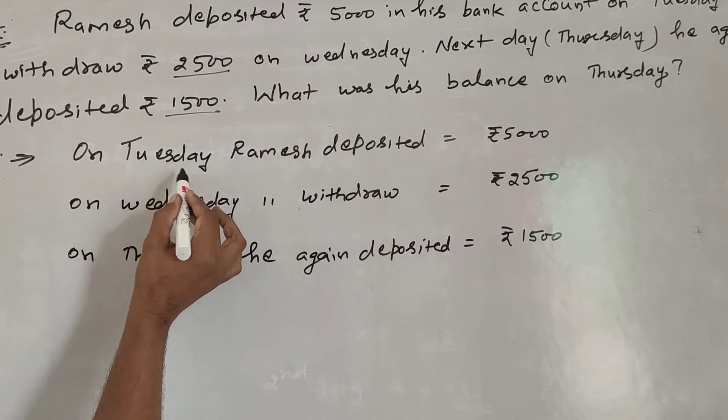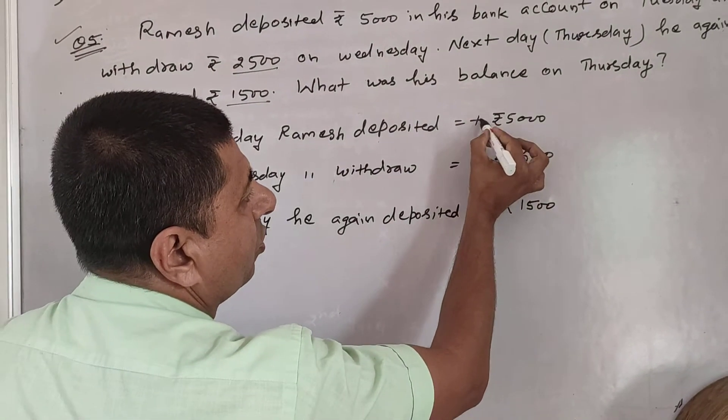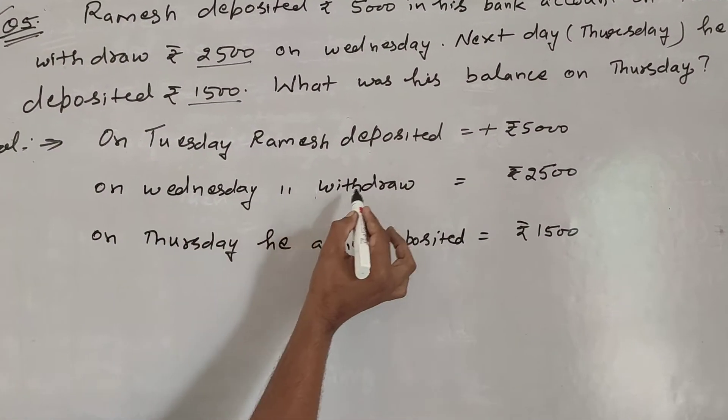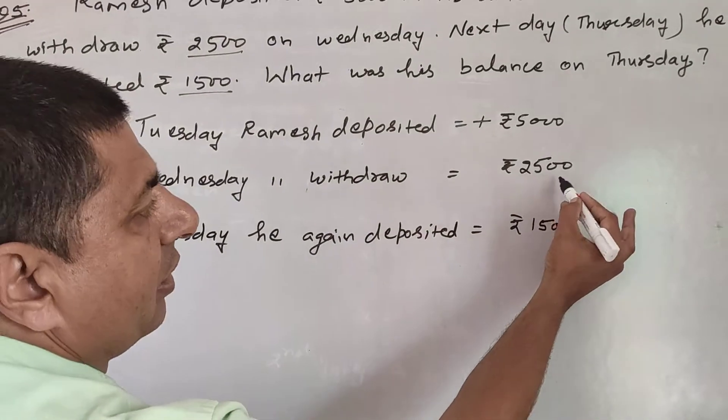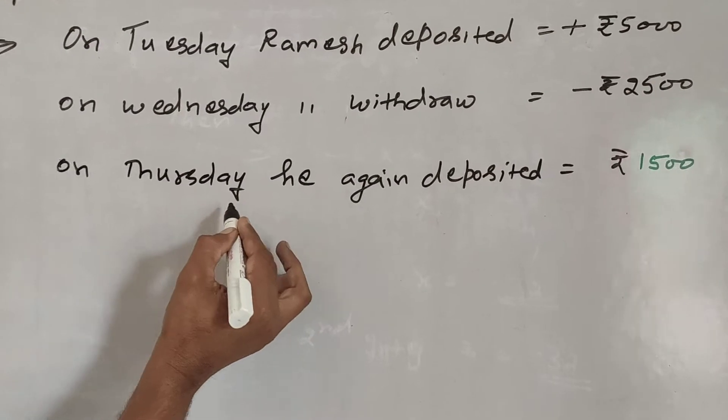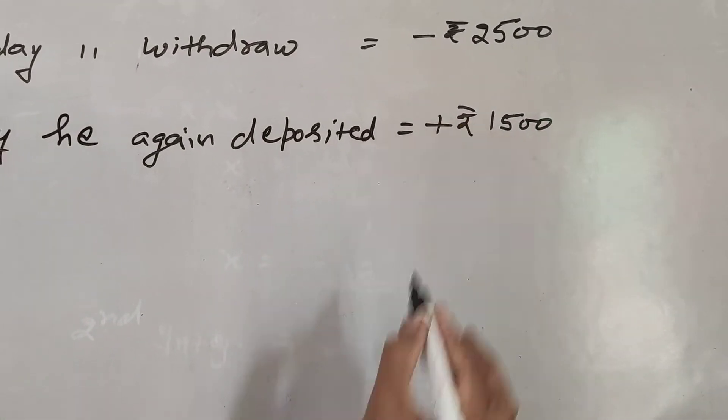On Tuesday, Ramesh deposited Rs. 5,000, so deposits are positive. On Wednesday, he withdrew Rs. 2,500, so withdrawals are negative. On Thursday, he again deposited Rs. 1,500, so this is also positive.